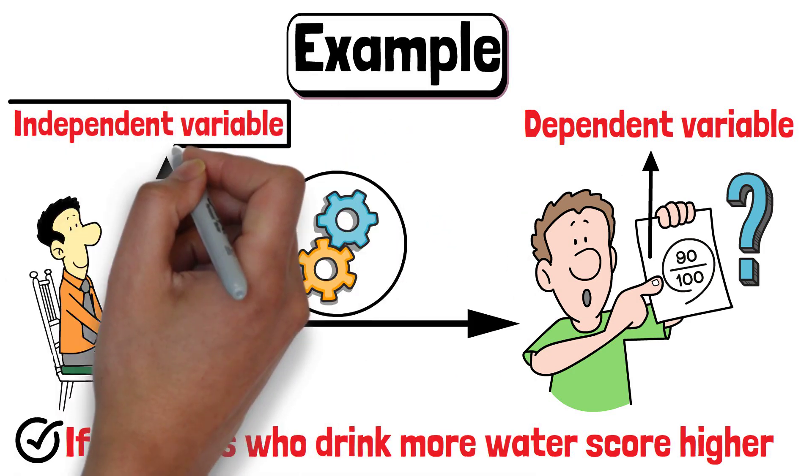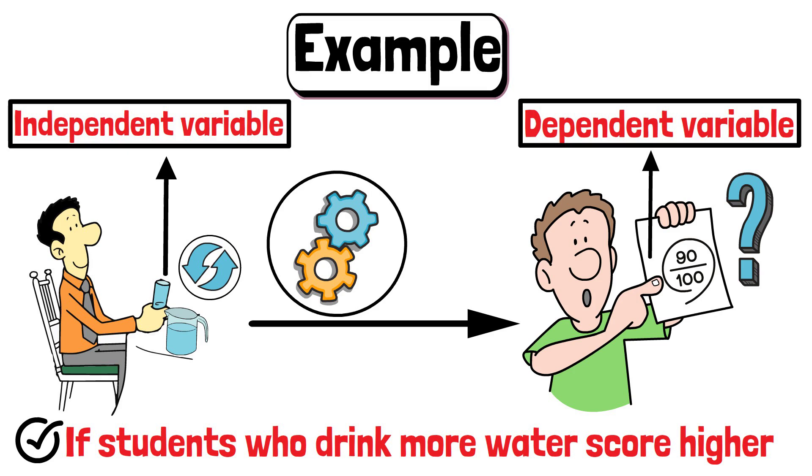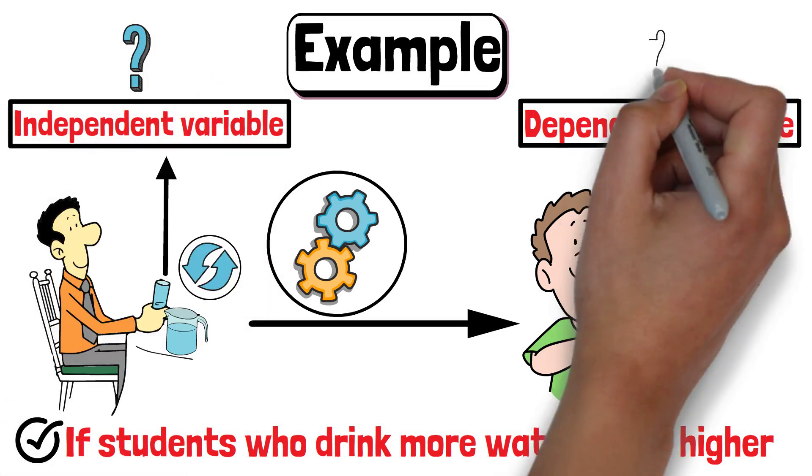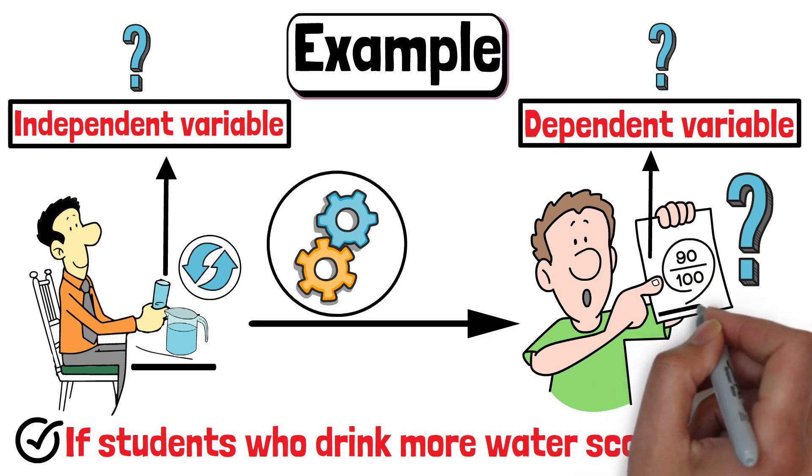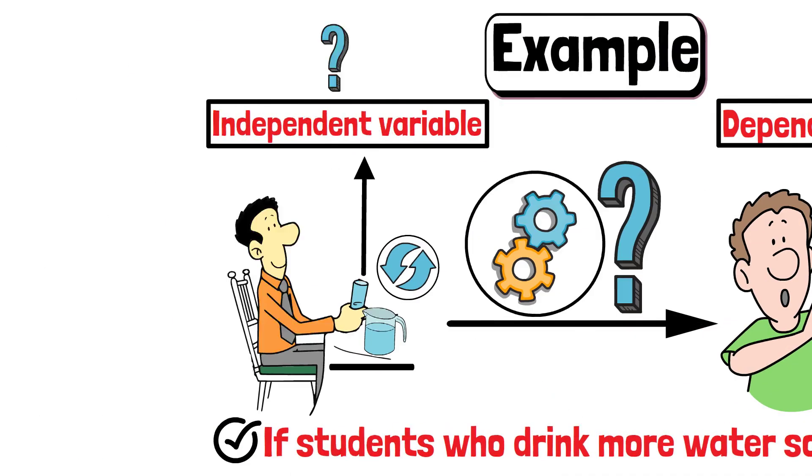Understanding these variables is important for conducting experiments. If you do not identify your independent and dependent variables, your results might be confusing. For example, if you forget to mention how much water the students drank while discussing their scores, you will not know if the amount of water made a difference.